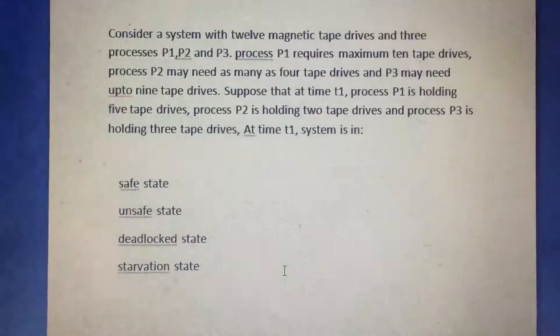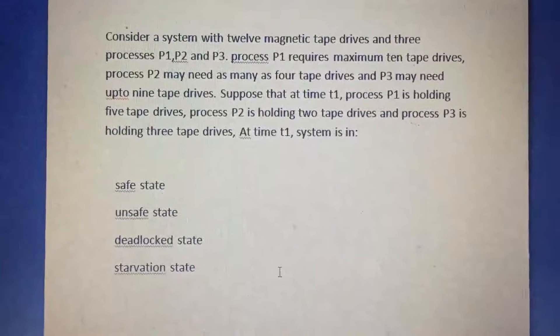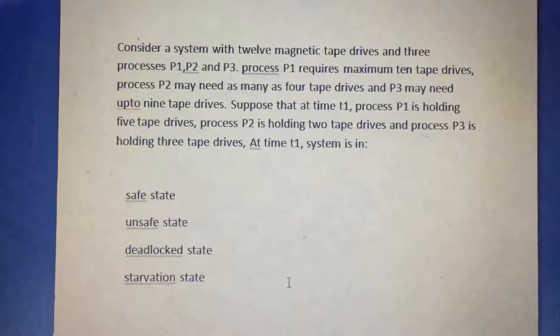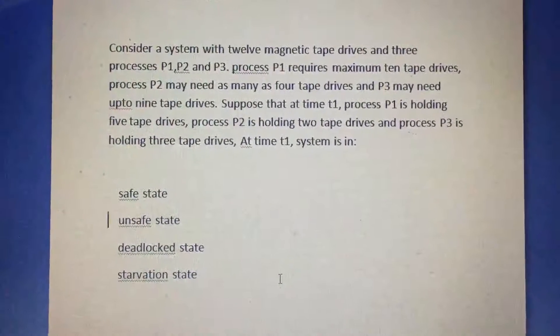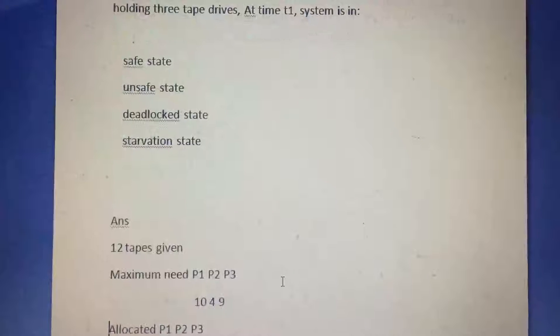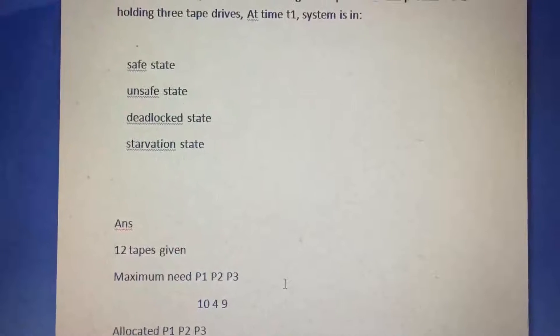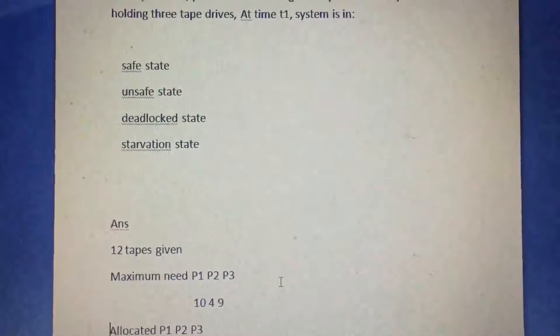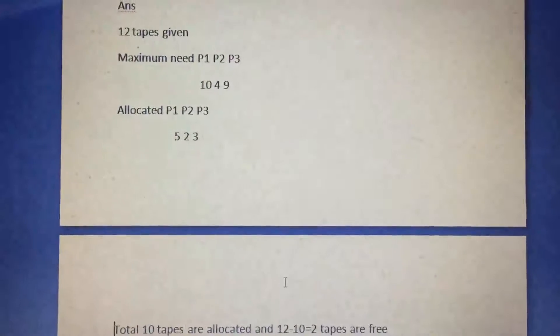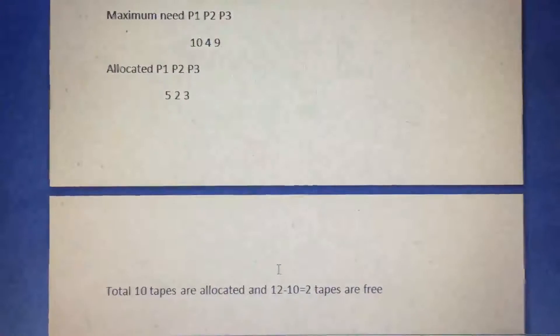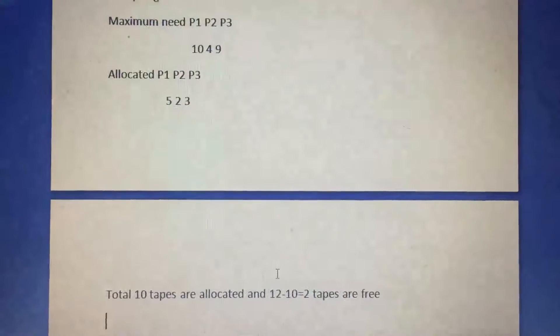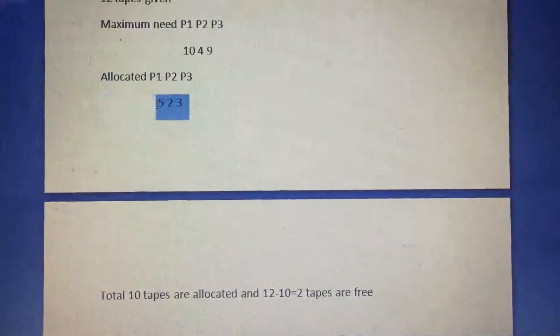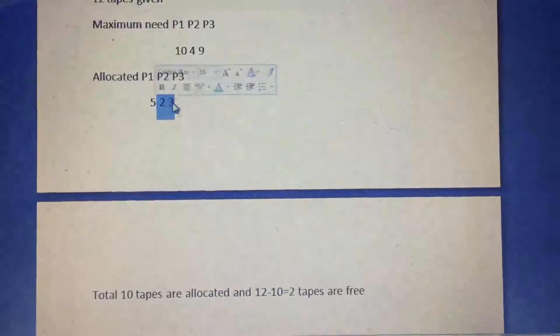You can see from the question firstly you have to mention what is given. Let's talk about the answer. These are the values. Total tapes are given. Maximum need for P1, P2, and P3 is given. Allocated is also given. Now we have two tapes that are free because you can see the allocated: 5 plus 2 plus 3 equals 10. So 10 is allocated from the 12. The rest of the tapes are 2, so we have two tapes.